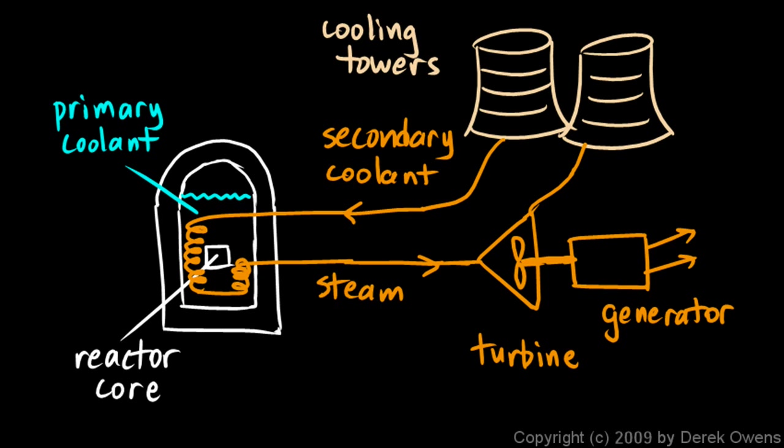In what they call a fossil fueled power plant, they would be burning coal or perhaps oil or natural gas, some kind of fossil fuel to heat the water to make the steam. In this case they're burning the nuclear fuel - a nuclear reaction is generating the heat to make the steam.